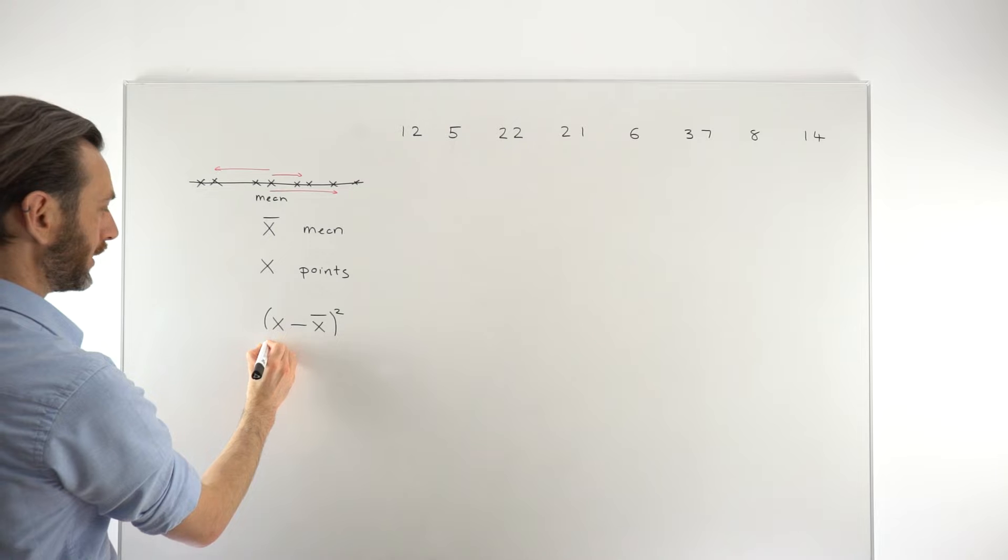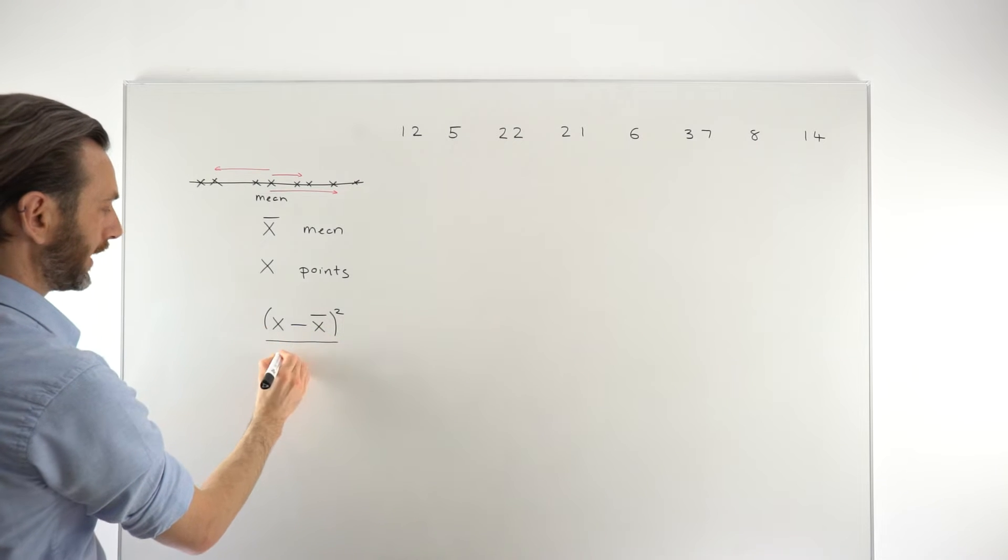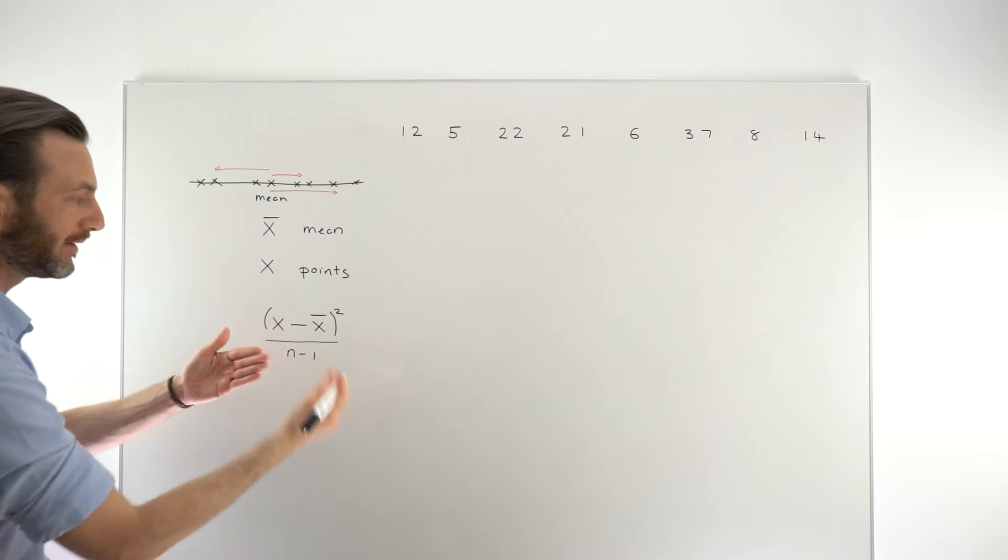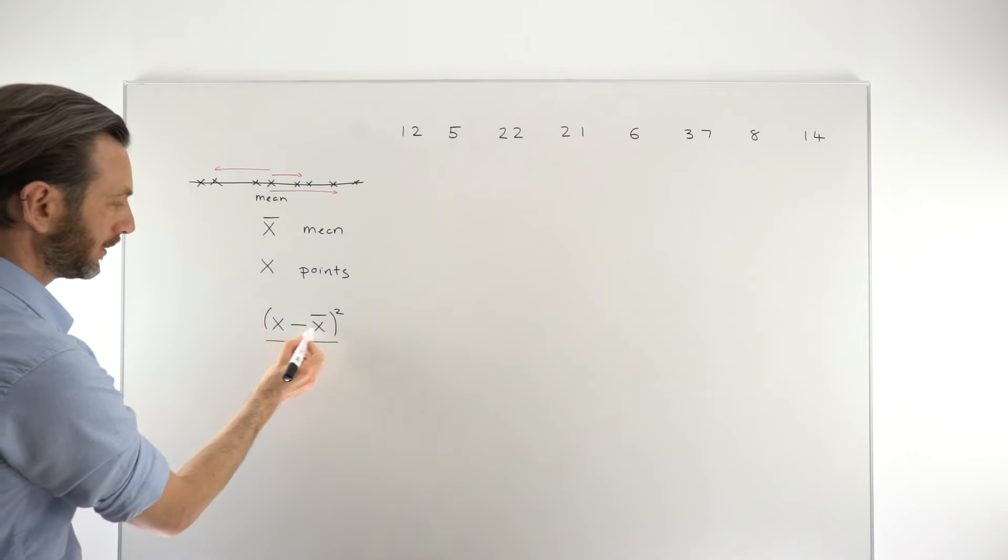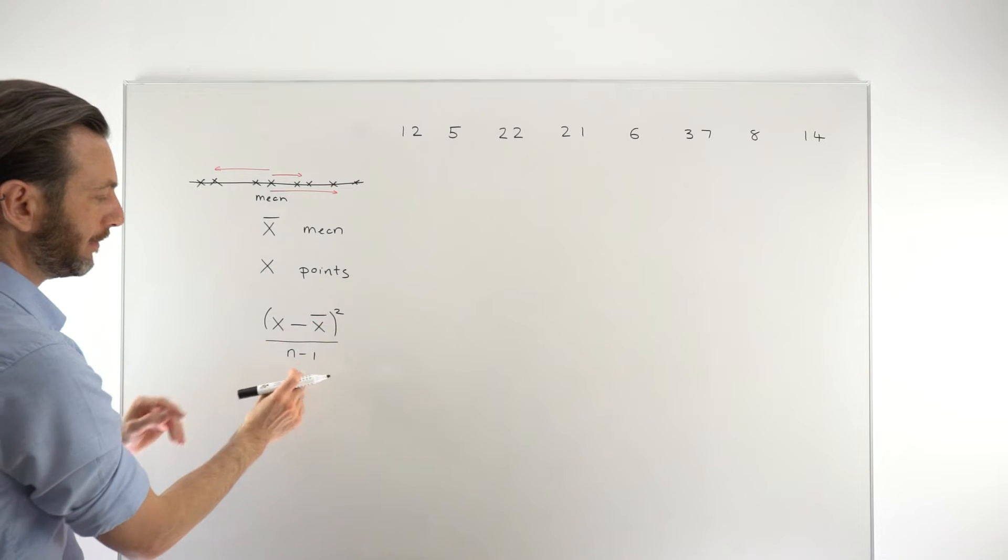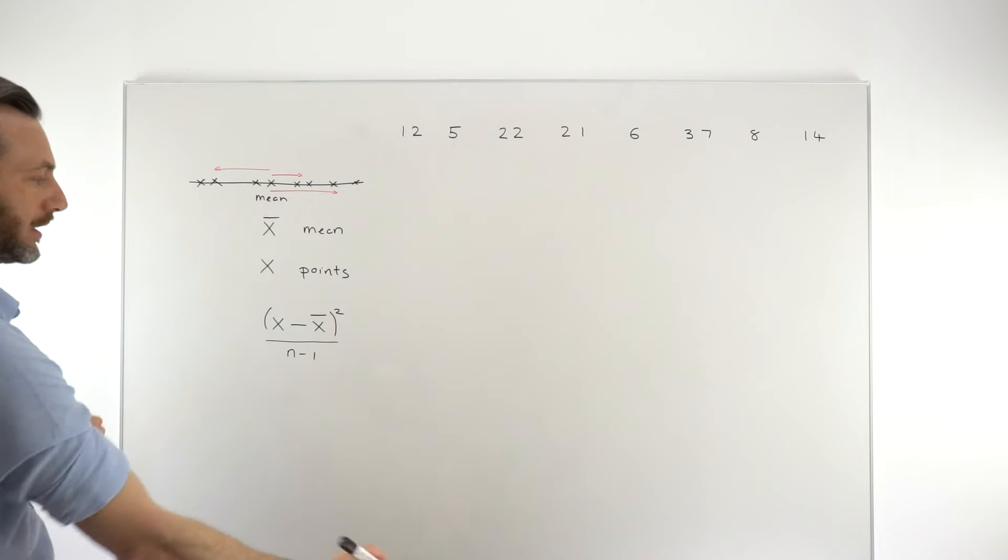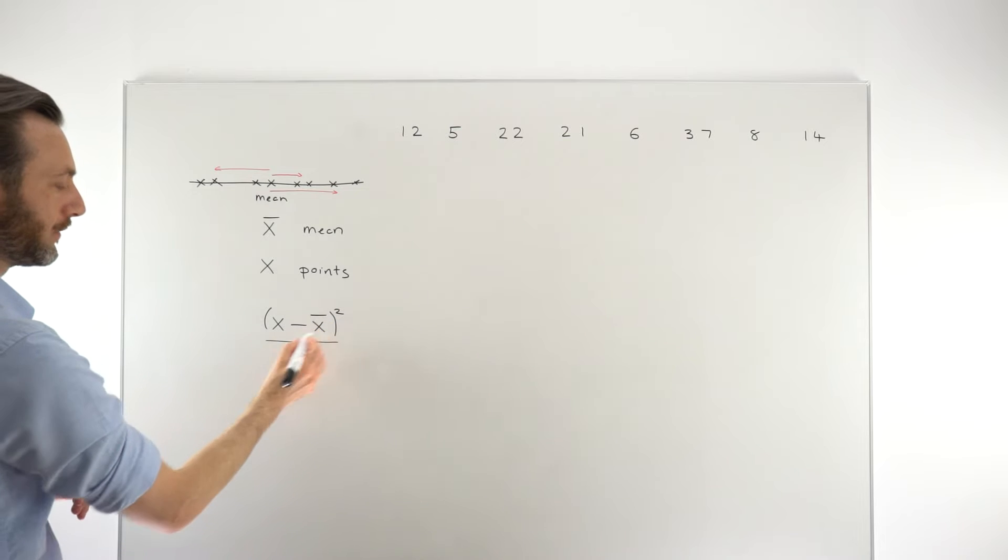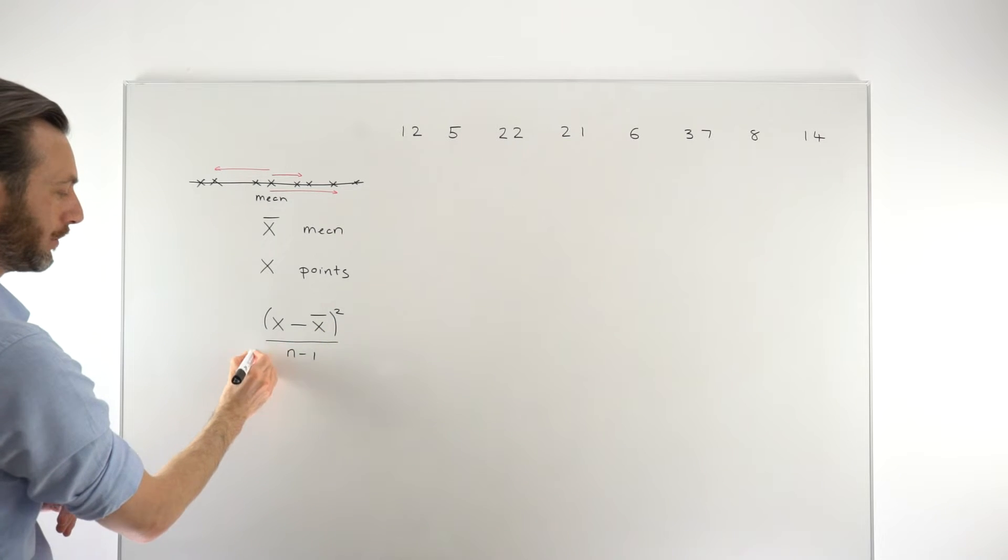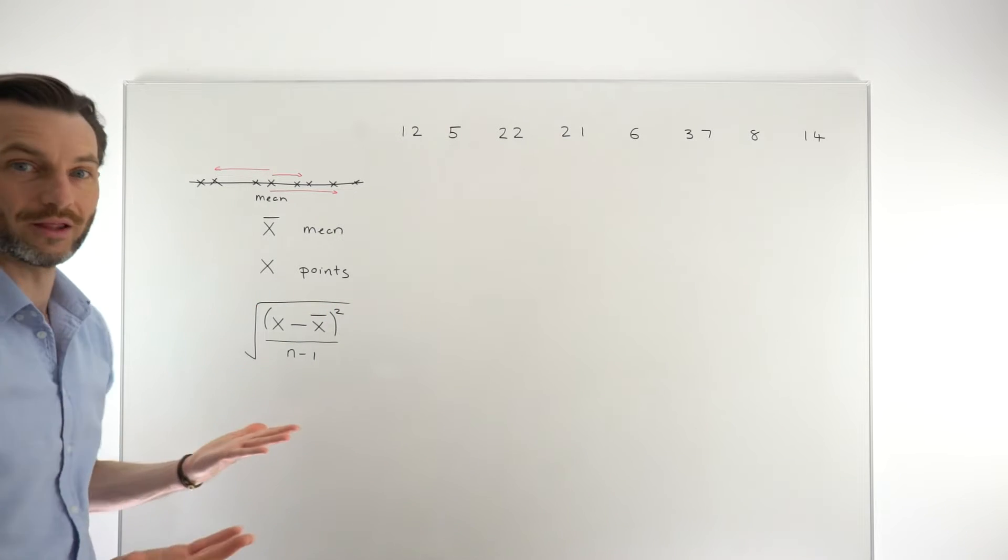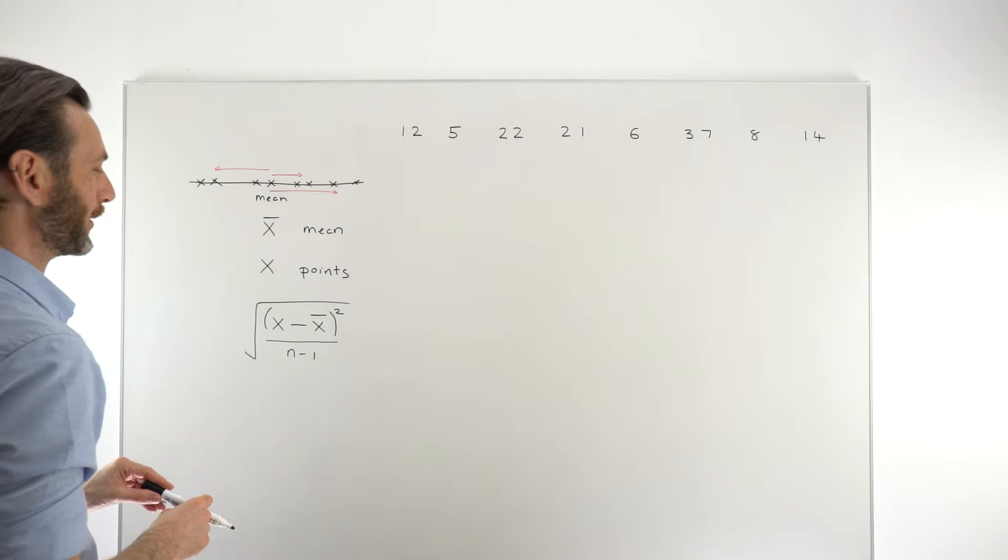So we say that we're going to divide this by n minus one to average the gaps. So we're taking the difference between the gaps, squaring them, taking the average, which is divided by the number of gaps, and then to compensate for the fact that we squared it, we just put a big square root around all of that. So that's basically the formula. It does look a little weird.